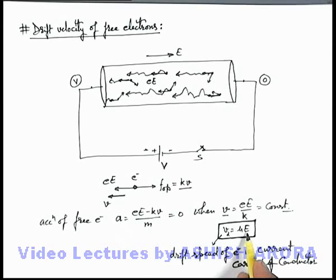This is proportional to the electric field and here the proportionality constant μ we term as mobility of free electrons in the metal.